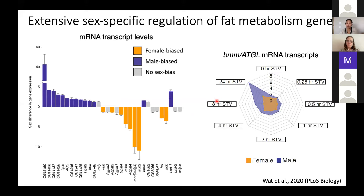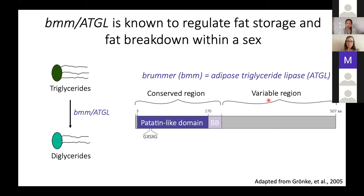One gene stood out because of its unique profile: brummer. In spider plots showing fold change over starvation time points, brummer transcripts are male-biased at all time points. In response to starvation, males immediately and dramatically increase brummer transcript levels, whereas females maintain a much more steady state. Brummer was the only gene with this specific mRNA transcript profile in both sexes. Brummer is the Drosophila homolog of mammalian adipose triglyceride lipase (ATGL), and both catalyze the rate-limiting step in fat breakdown — converting triglycerides into diglycerides. The protein contains a patatin-like domain with the catalytic core, a brummer box, and a variable region.